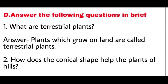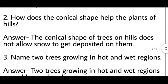Second: how does the conical shape help the plants of hills? The answer is: the conical shape of trees on hills does not allow snow to get deposited on them. Pahadon pe ugne waale trees ka shape conical hone ke karan unke upar barf ki partein jami nahi rehti hain — wee fisal kar neeche gir jaati hain.